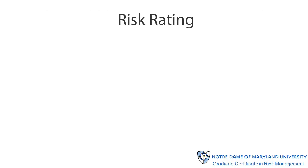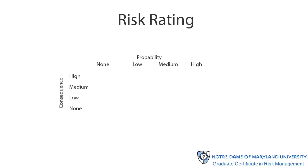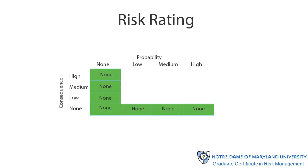The last step in the risk characterization is to assign an overall risk rating based on the consequence rating and the probability rating. For this example, we'll use four ratings: high, medium, low, and none, for both risk components. What we want to do is develop a risk matrix, as we discussed earlier in the course. Any risk that has none as one of its components is going to have no risk potential — let's color these cells green. We know the greatest risk potential is when probability and consequences are both high — let's color that cell red.